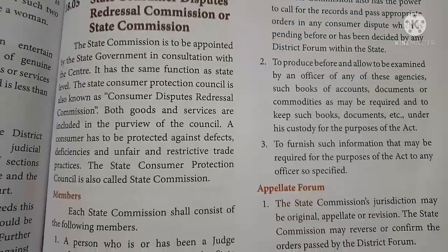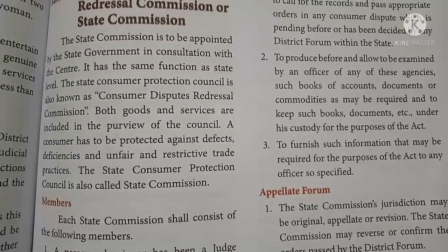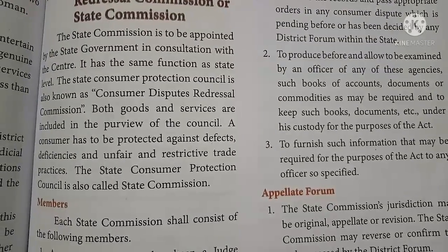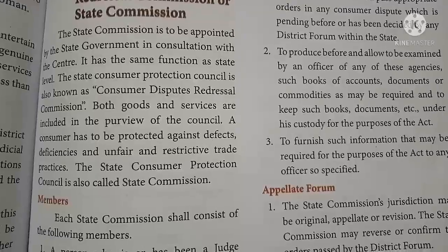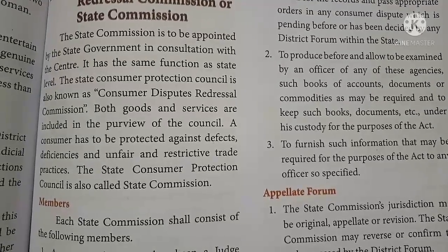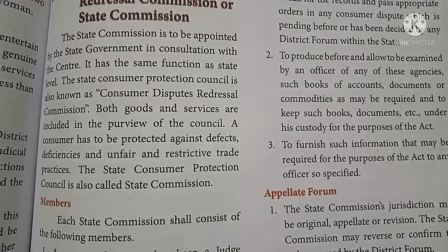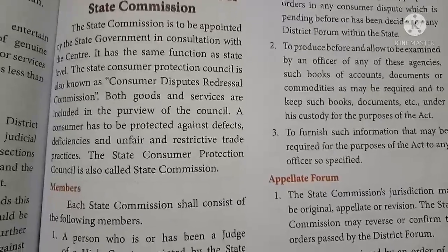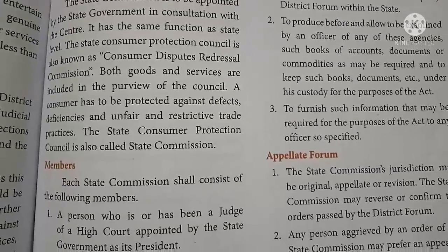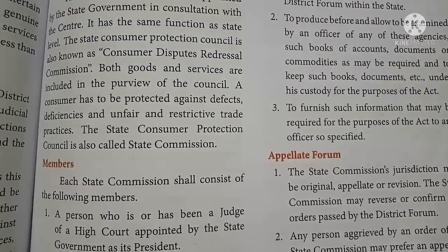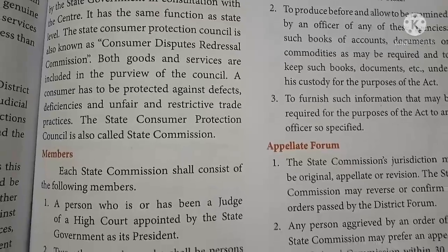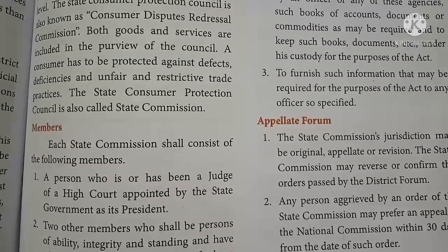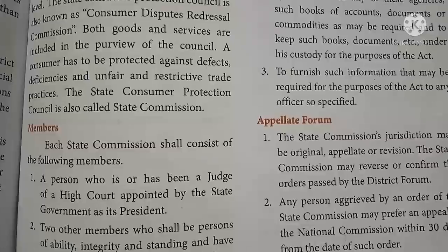The state commission has the power to require the production and examination of books of accounts, documents, or commodities by an officer of relevant agencies. It may keep such books and documents under its custody for the purpose of the act and furnish such information as may be required.